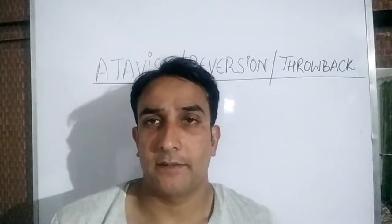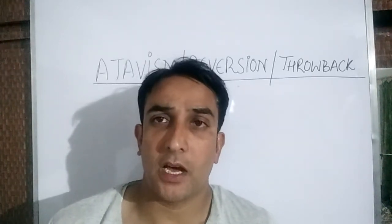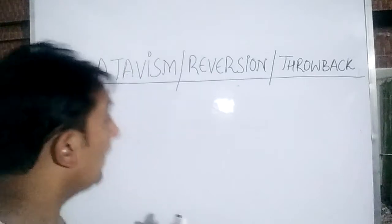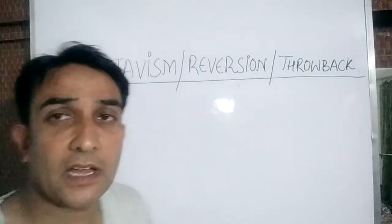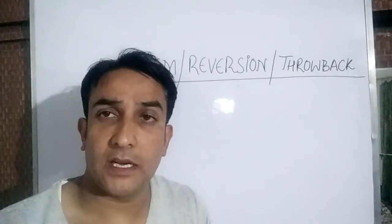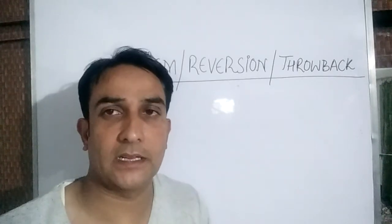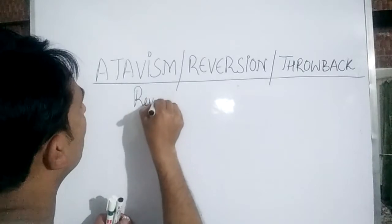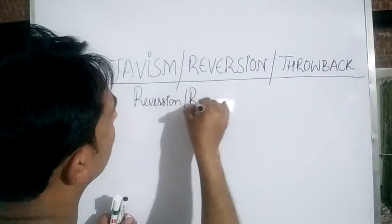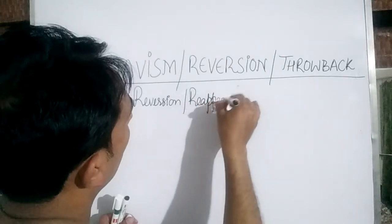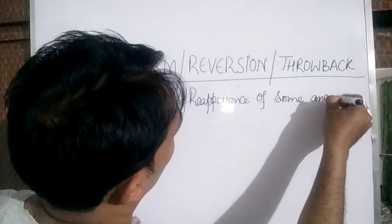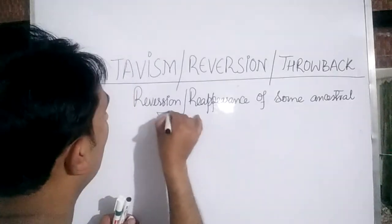Hello, I'm Mudabir Qureshi, and you are watching Mudabir's Biology Collab. Today our topic is atavism, also known as reversion or throwback. Atavism is basically the reappearance of some ancestral, and not parental, character in some organism.